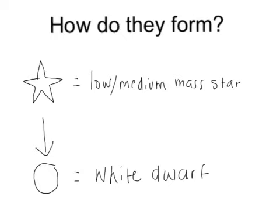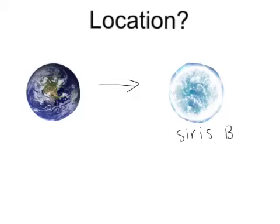White dwarfs are stars that have burned up all the hydrogen they once used as nuclear fuel. There are many white dwarfs. The closest one to Earth is called Cyrus B. It is about 8.6 light years away.